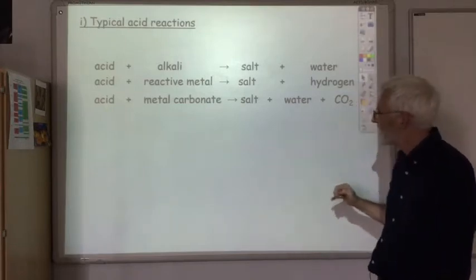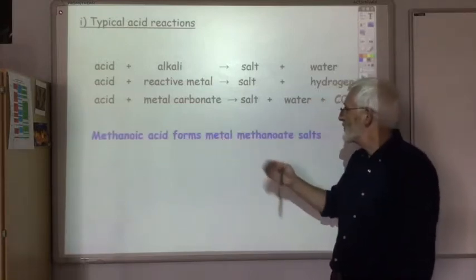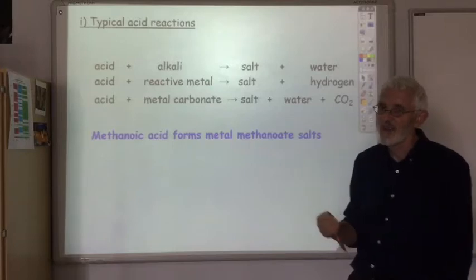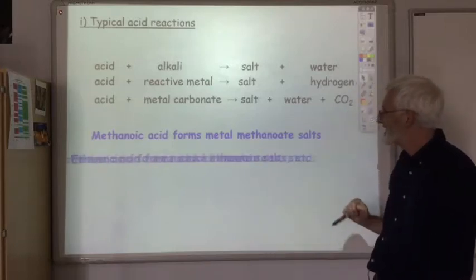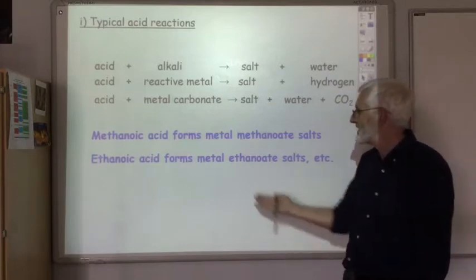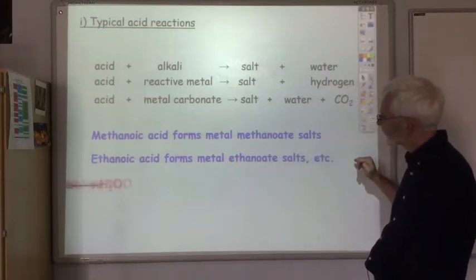With the carboxylic acids, the naming, well, if it was methanoic acid, it's metal methanoate. So, the ion is called the methanoate ion. Ethanoic acid, it's the ethanoate ion, so you'd form a metal ethanoate.